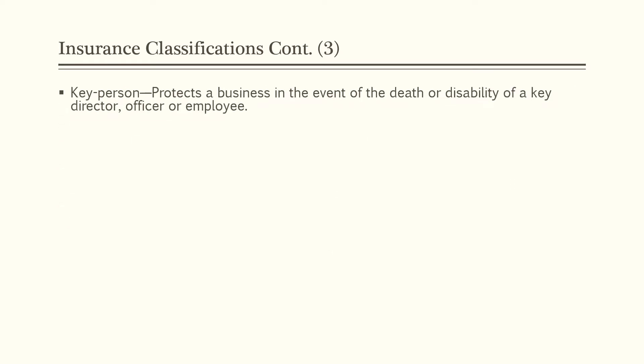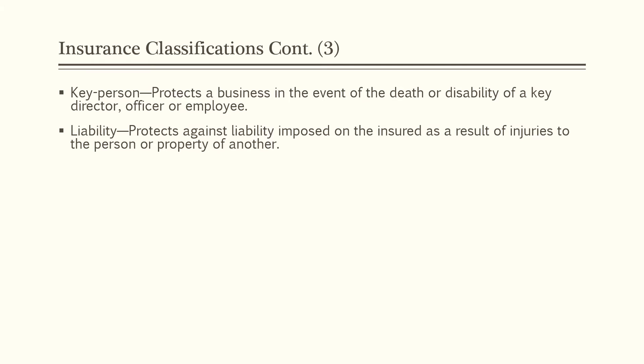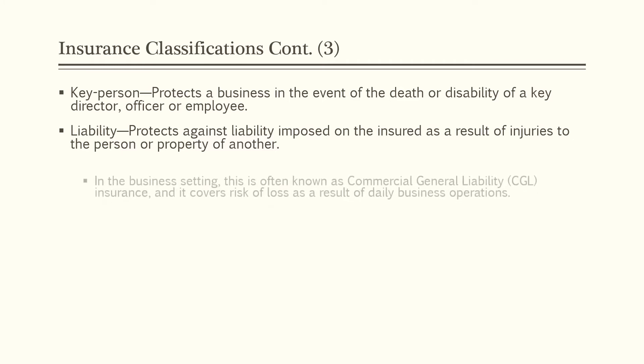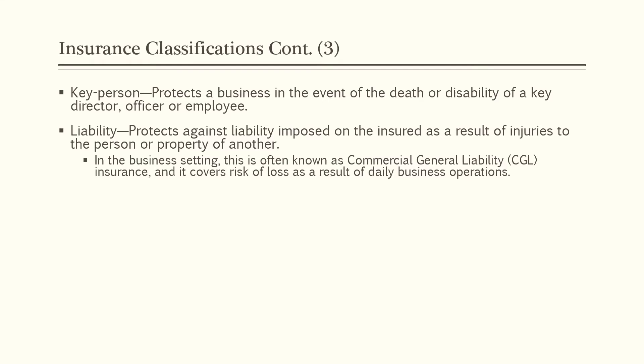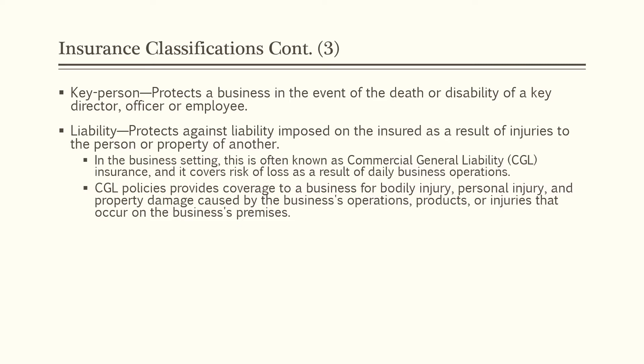The next type of insurance is key person insurance. It protects a business in the event of the death or disability of a key director, officer, or employee. Then there's liability insurance. This protects against liability imposed on the insured as a result of injuries to the person or properties of another. You often see liability sections in auto and homeowners policies. In the business setting, this is often known as commercial general liability insurance, called CGL insurance, and it covers the risk of loss as a result of daily business operations. CGL policies provide coverage for bodily injury, personal injury, and property damage caused by the business's operations, products, or injuries that occur on the business's premises.